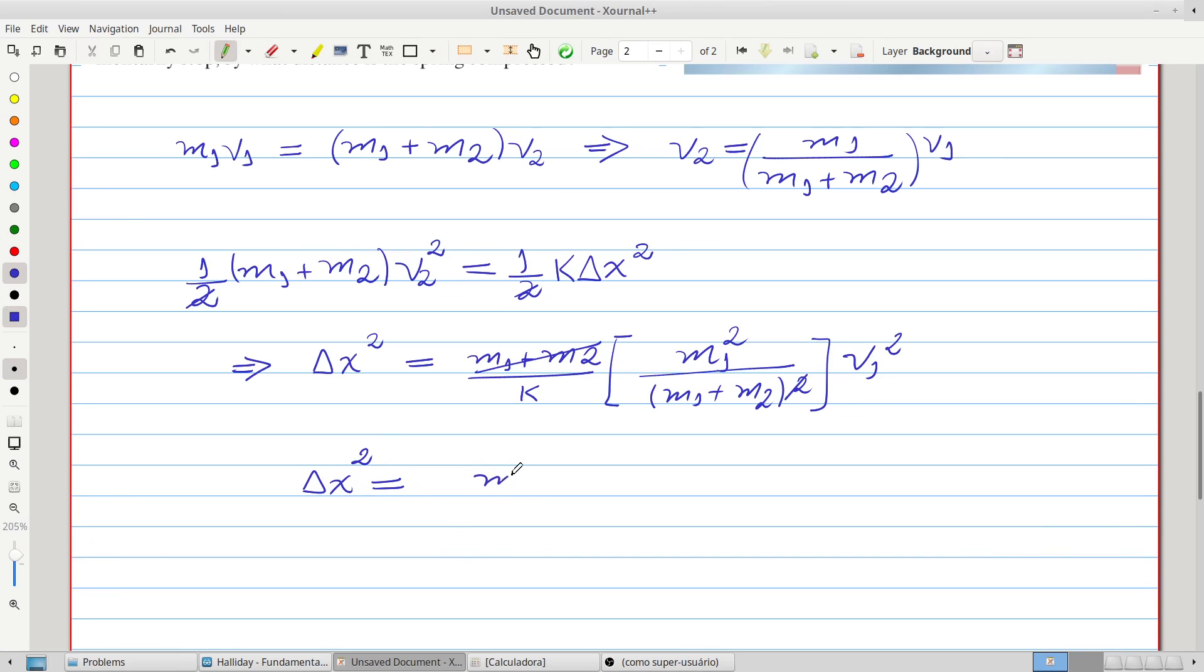M1 squared, divided by K, multiplied by M1, plus M2, multiplied by V1 squared.